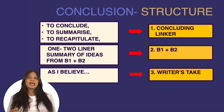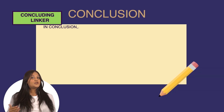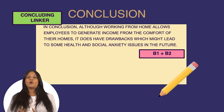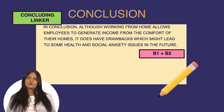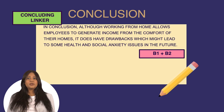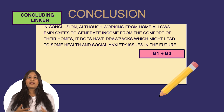The second element requires a one or two-line summary of ideas picked from body paragraph 1 and body paragraph 2. The optional point is the writer's position. Let's write the conclusion with the help of these elements. First, we need to use a concluding linker — we have chosen 'in conclusion' for this task. Now the body 1 and body 2 summary goes: although working from home allows employees to generate income from the comfort of their homes, it does have drawbacks which might lead to some health and social issues in the future. That's the summary — very concise and to the point, including all the relevant ideas. It easily helps the reader grasp the gist of the entire essay in only a couple of sentences.